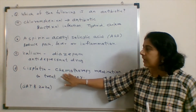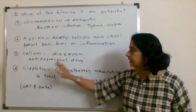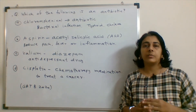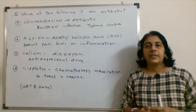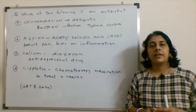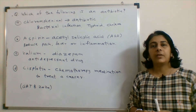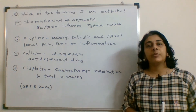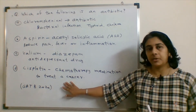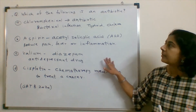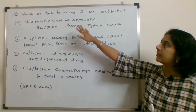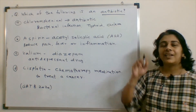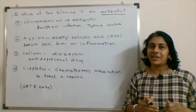The fourth option is cisplatin. This is a chemotherapy medication used to treat a number of different cancers such as breast cancer, urinary bladder cancer, and cervical cancer. This drug is used in chemotherapy treatment. So looking at our question — which of the following is an antibiotic — as we have learned, what is the difference between an antibiotic and a drug?